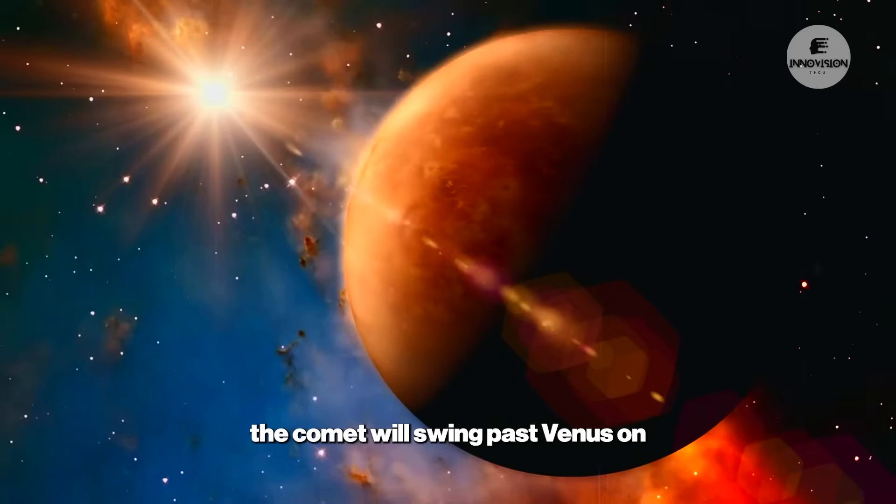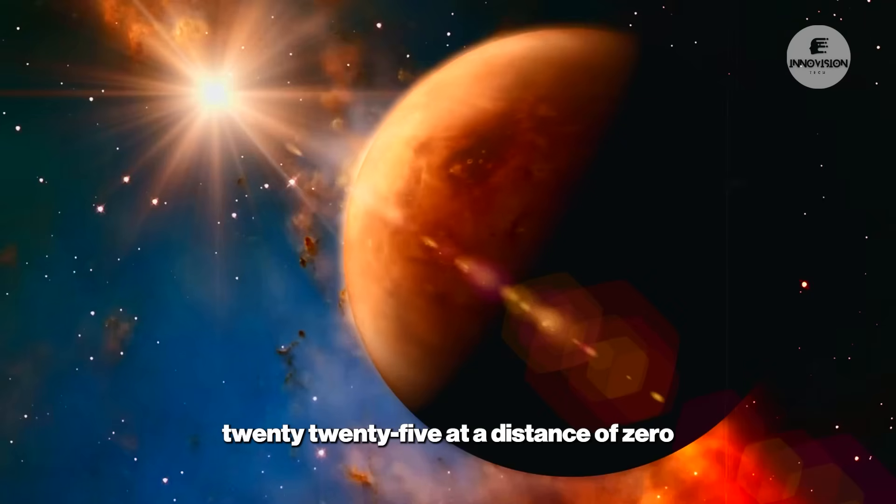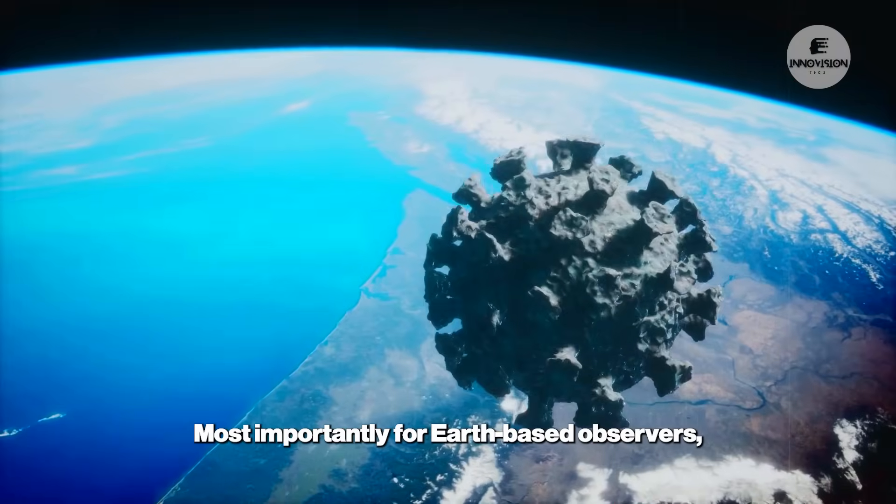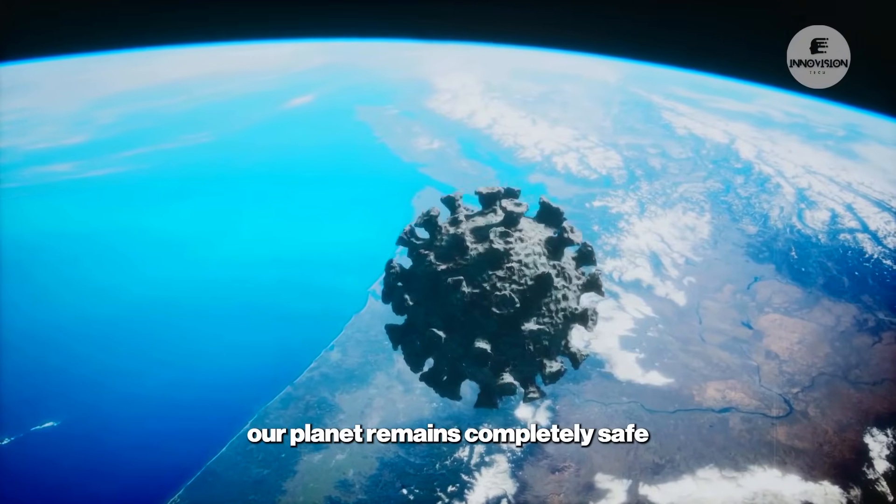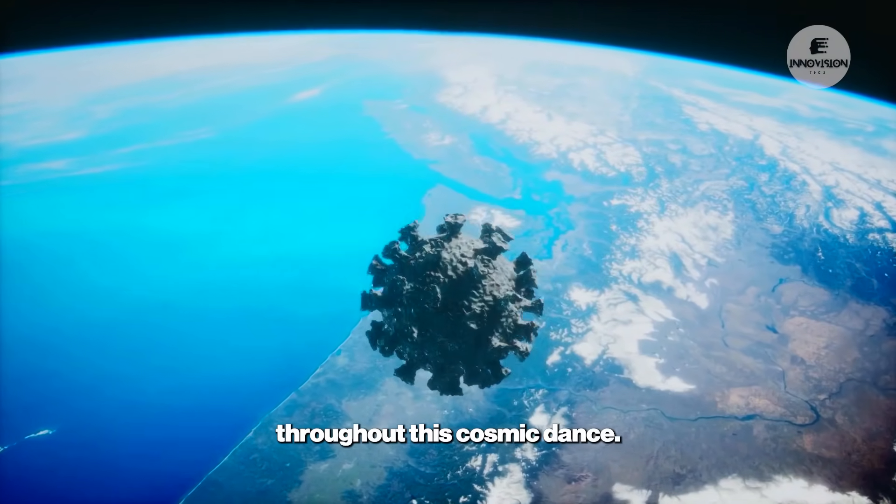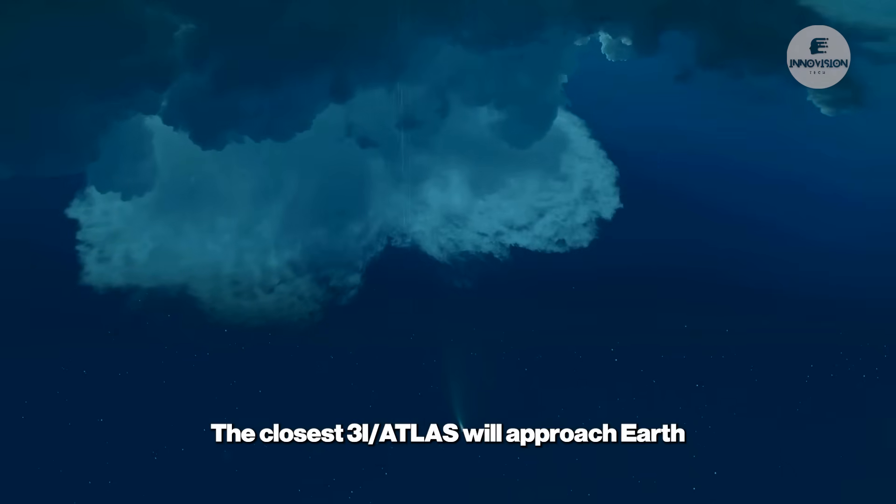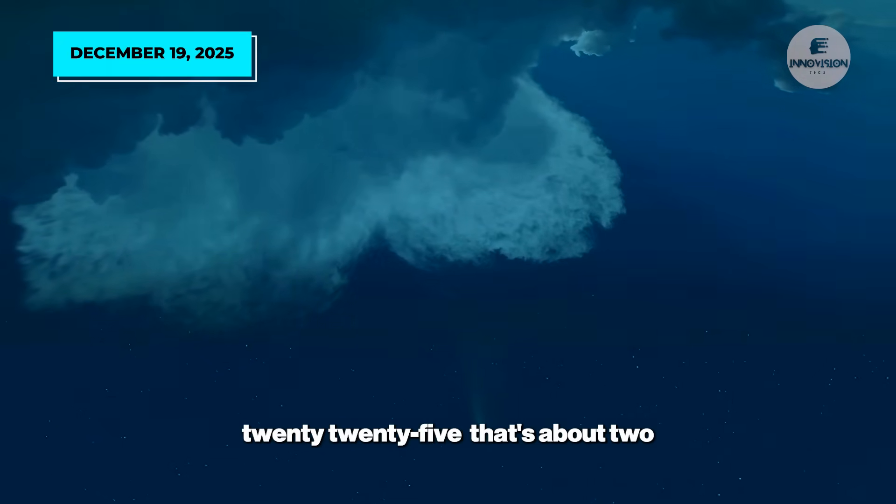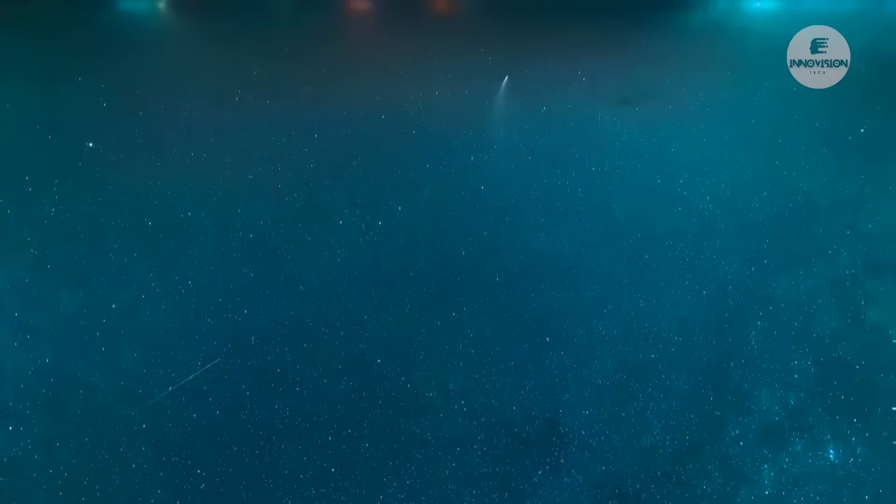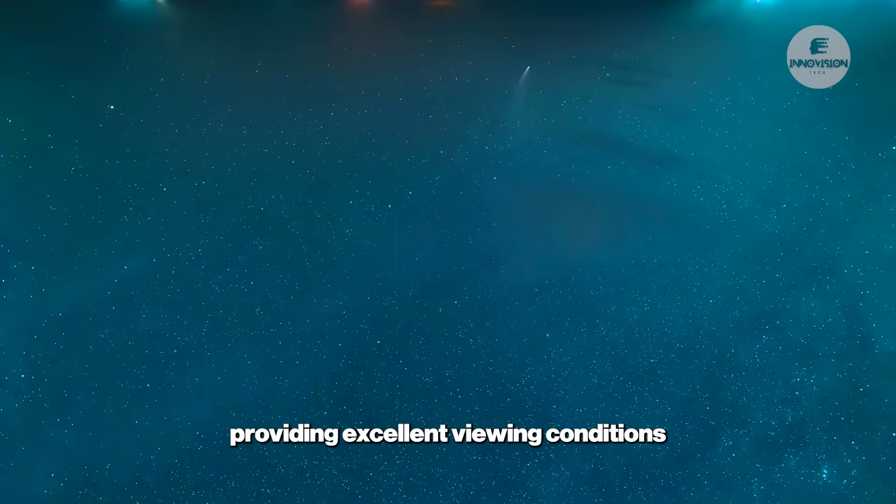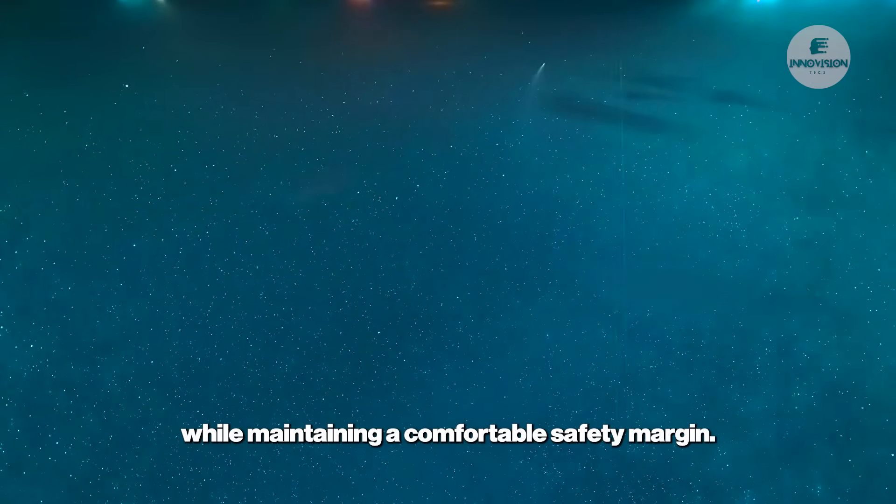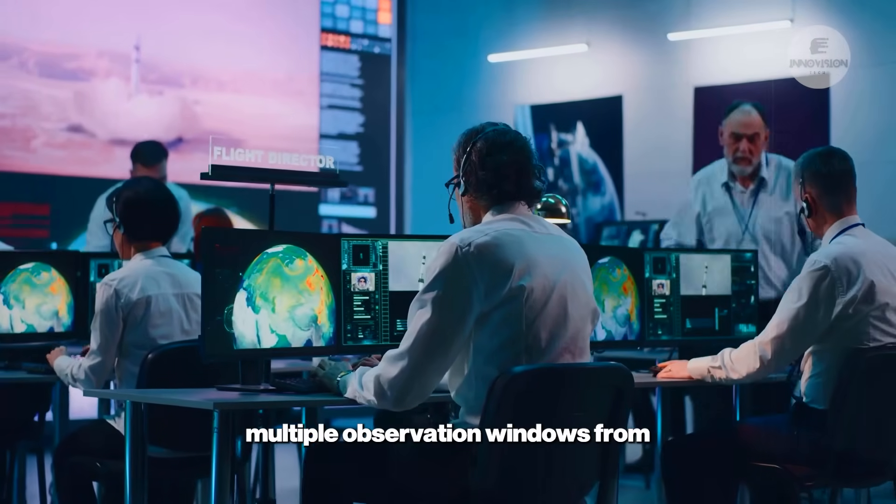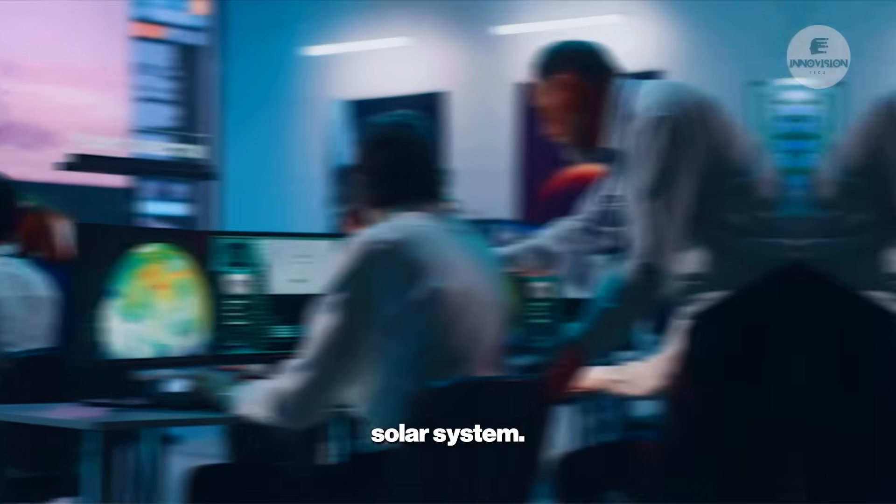Following perihelion, the comet will swing past Venus on November 3rd, 2025 at a distance of 0.65 astronomical units. Most importantly for Earth-based observers, our planet remains completely safe throughout this cosmic dance. The closest 3I Atlas will approach Earth is 1.8 astronomical units on December 19th, 2025. That's about 270 million kilometers away, providing excellent viewing conditions while maintaining a comfortable safety margin. This trajectory offers astronomers multiple observation windows from different vantage points throughout the solar system.